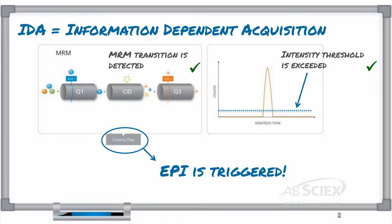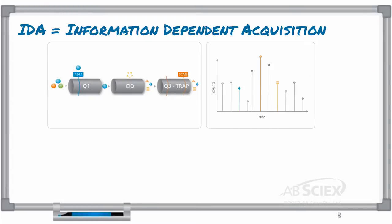In the EPI scan, all fragments from the parent are trapped in Q3 and scanned out, providing you with a full MS-MS fragmentation spectrum associated with your parent peak.